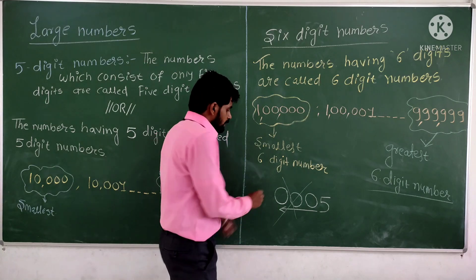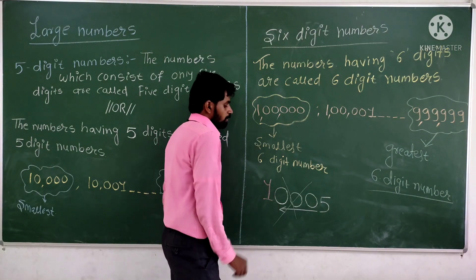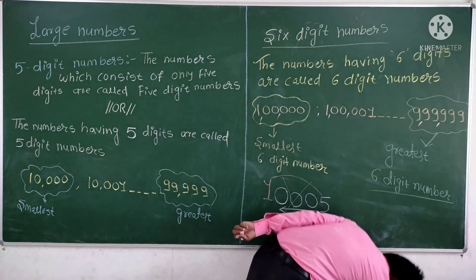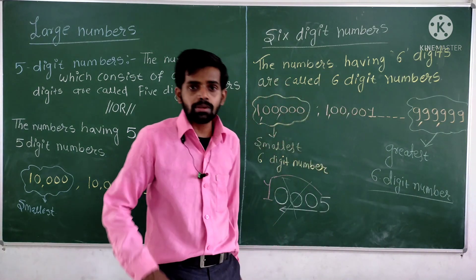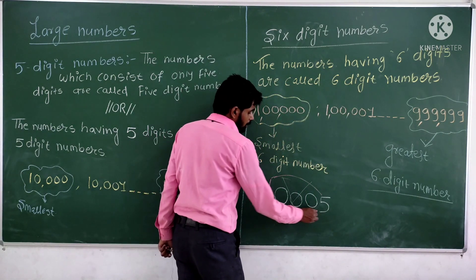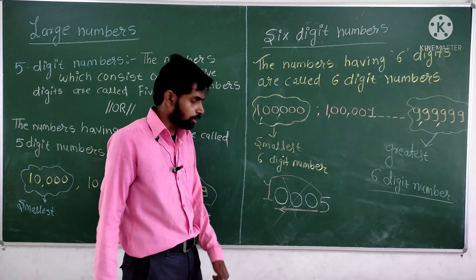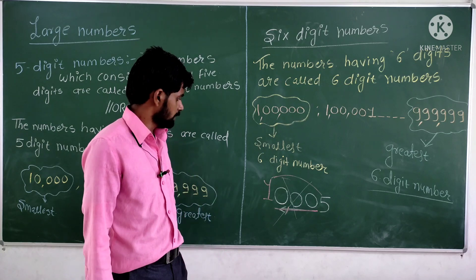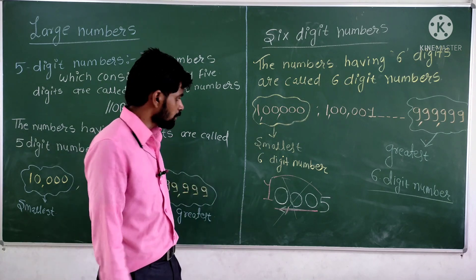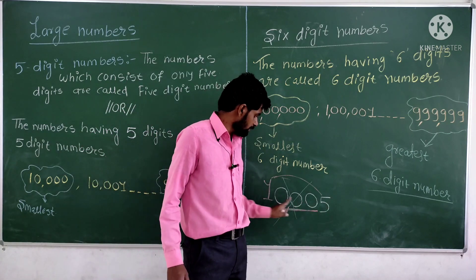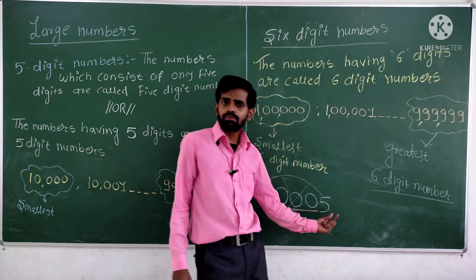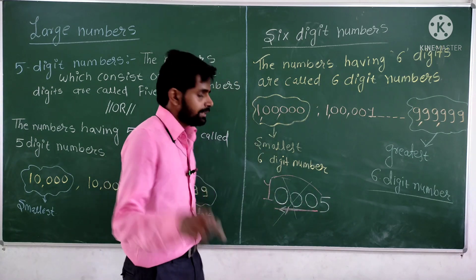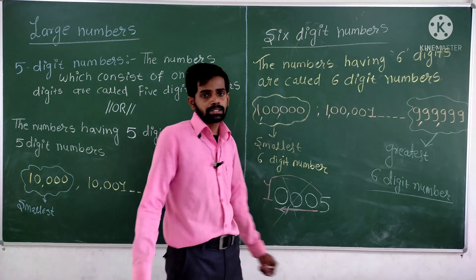But if there is a zero in between two non-zero digits, you have to count it. For example, 10,005 — here the zero is present in between two non-zero digits. In this case, you have to count these digits. So the number is 10,005, a five digit number.